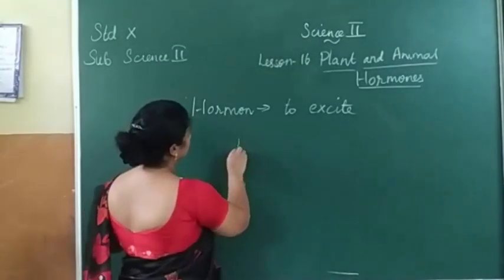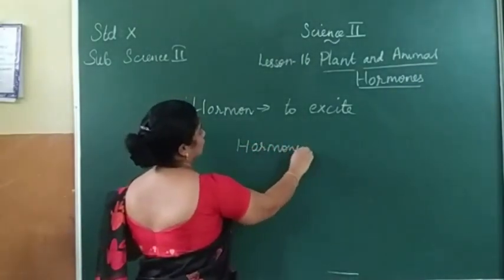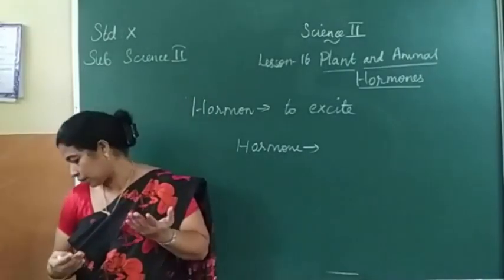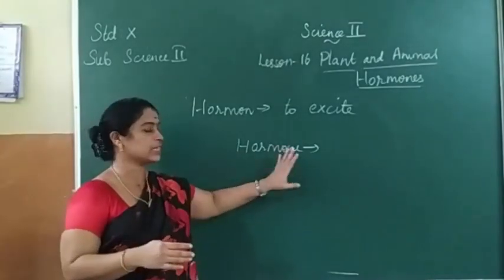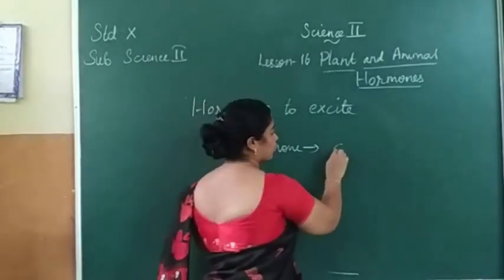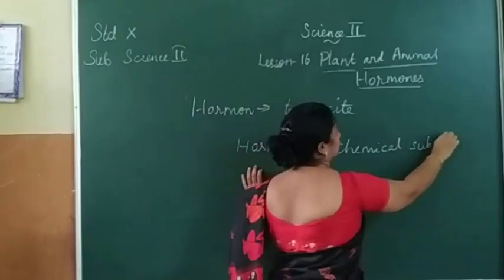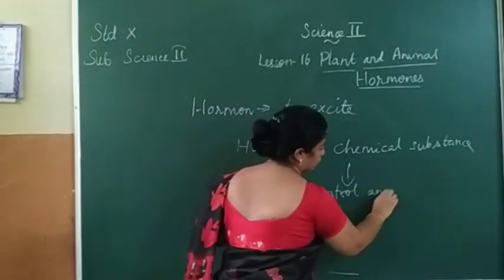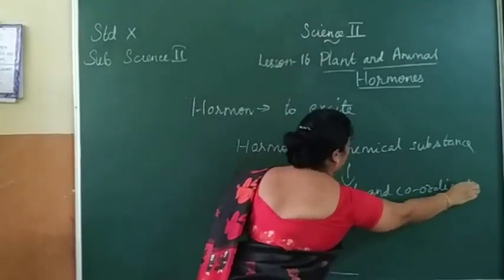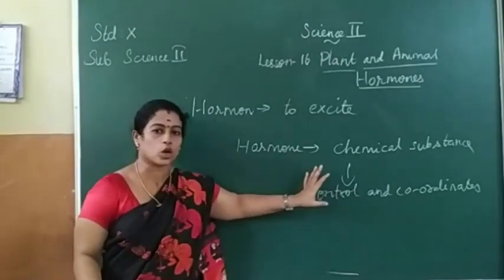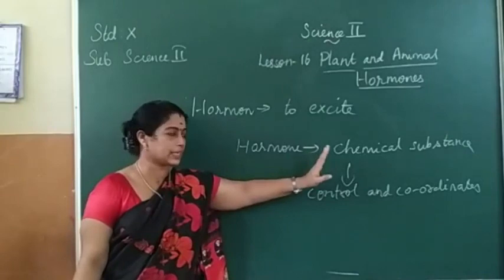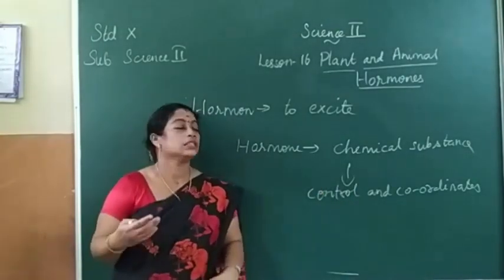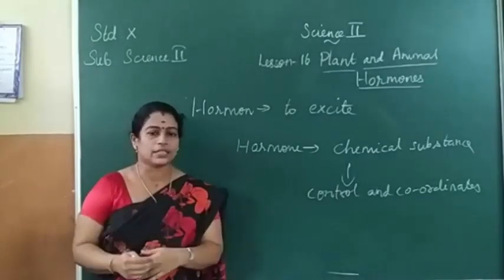In plants, hormones are controlling the coordination and physiological functioning. Hormones are chemical substances that control and coordinate the functions of a plant. They are produced in each and every cell of the plant body.